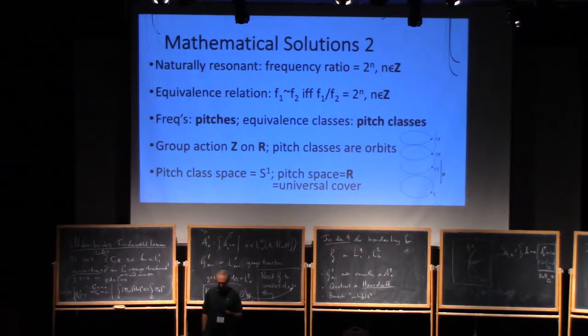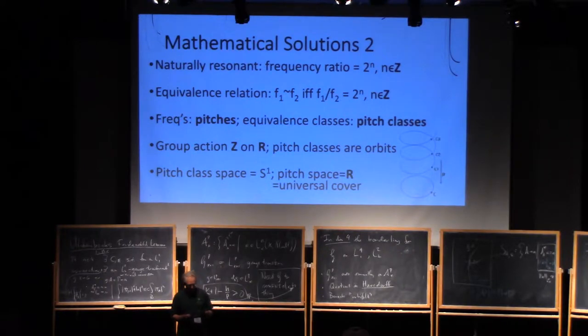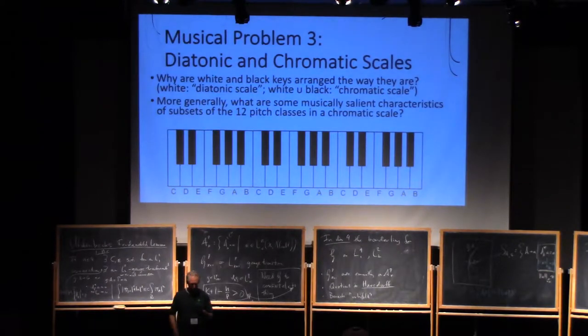Every eighth pitch in the scale gets the same name, and every eighth white piano key gets the same name. So we say notes with the same name differ by a whole number of octaves. Notes get the same name because their frequency ratios are powers of two and thus resonant. The resulting equivalence relation leads to the term pitch class in music theory.